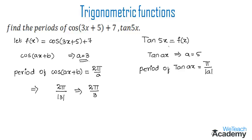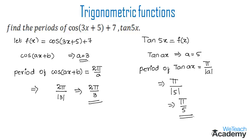In order to find the period of tan(5x), we get π/|5|, which gives π/5. So the period of cos(3x+5)+7 is 2π/3, whereas the period of tan(5x) is π/5.